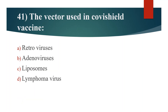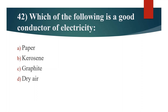Forty-first question. The vector used in Covishield vaccine. Option A: Retroviruses. Option B: Adenoviruses. Option C: Liposomes. Option D: Lymphoma virus. Answer is Option B: Adenovirus.